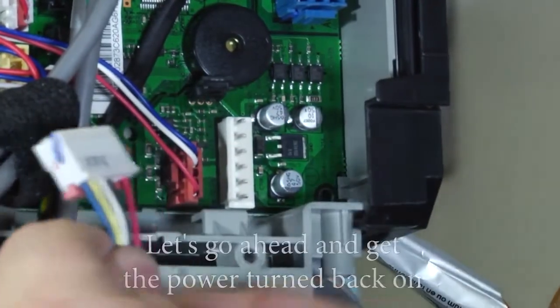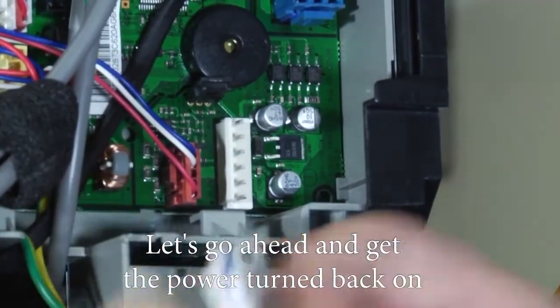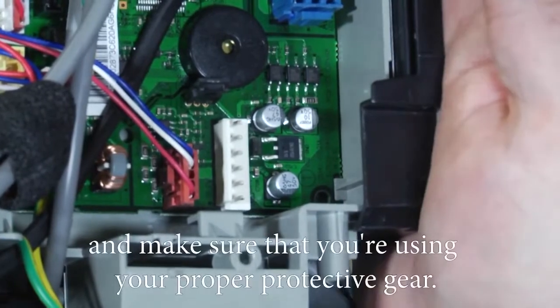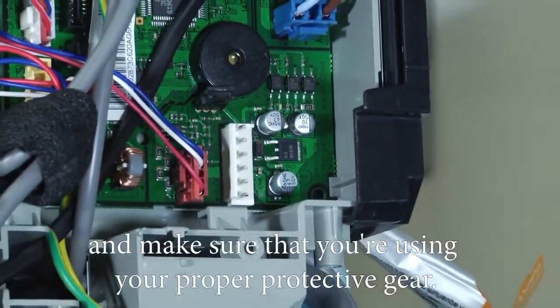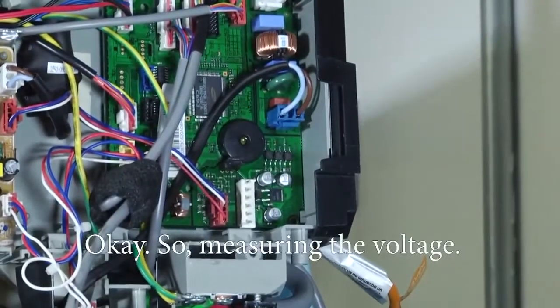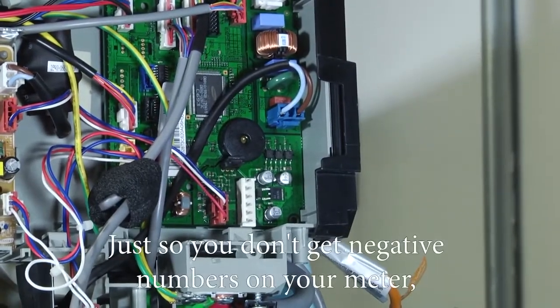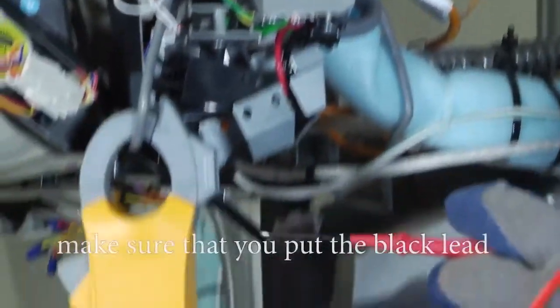Let's go ahead and get the power turned back on and make sure you're using your proper protective gear. Okay, so measuring the voltage—just so you don't get negative numbers on your meter, make sure that you put the black lead where the black wire would plug into and the red lead where the red wire would plug into.